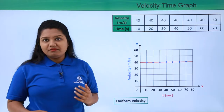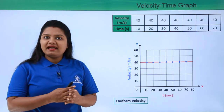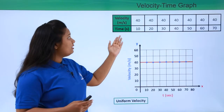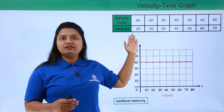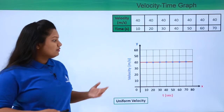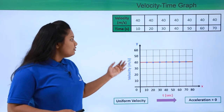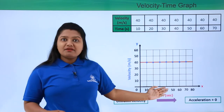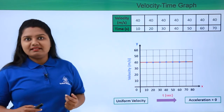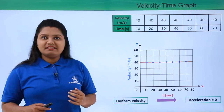Now what about the acceleration of this body? Acceleration is defined as the rate of change of velocity, but here there is no change in velocity throughout, so we can say there is no acceleration at all — the acceleration here will be 0. Whenever we see a velocity-time graph parallel to the x-axis, we can conclude that the body is moving with uniform velocity and zero acceleration.